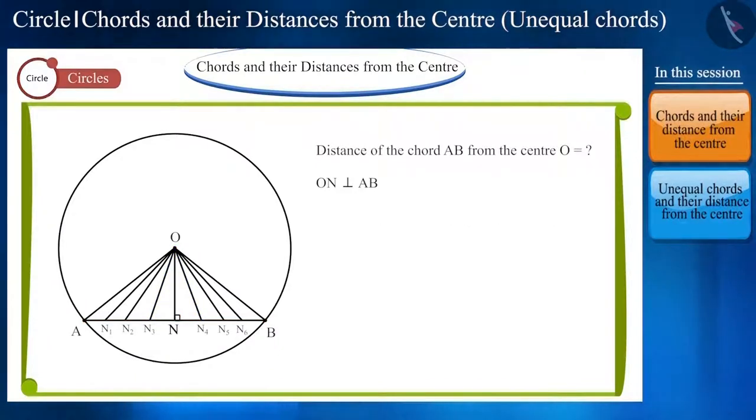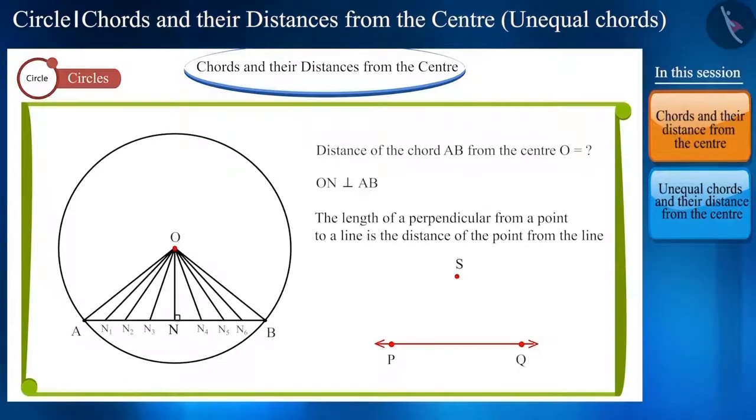Friends, in mathematics, we define this shortest length ON as the distance between O and AB. So now we can say that the length of a perpendicular drawn from a point on a line is the distance of that point from the line.